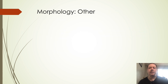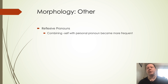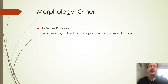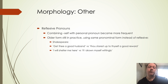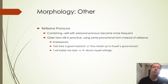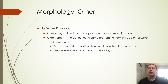A few other things in morphology: reflexive pronouns start becoming more frequent. In Old English 'self' was used as more of a reference pronoun, but combining 'self' with personal pronouns to be reflexive — to refer back to oneself — is becoming more frequent and starting to look more like present-day English. Older forms are still in practice where a pronominal form is used instead — 'get thee a good husband' — but you also see 'thou storest up to thyself a good reward,' or 'I will shelter me here' versus 'if I drown myself wittingly.' Shakespeare uses both the older and newer forms.